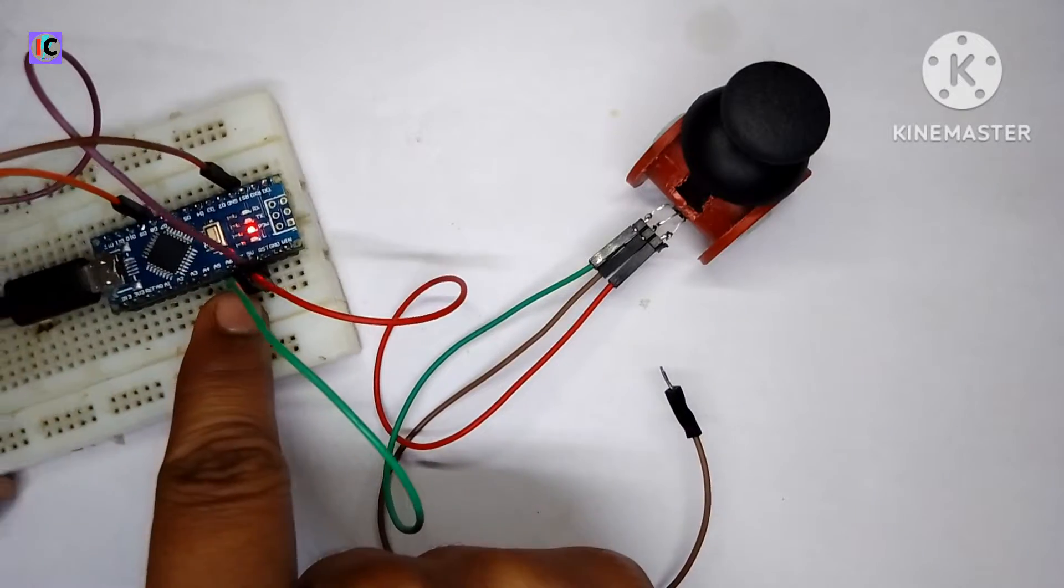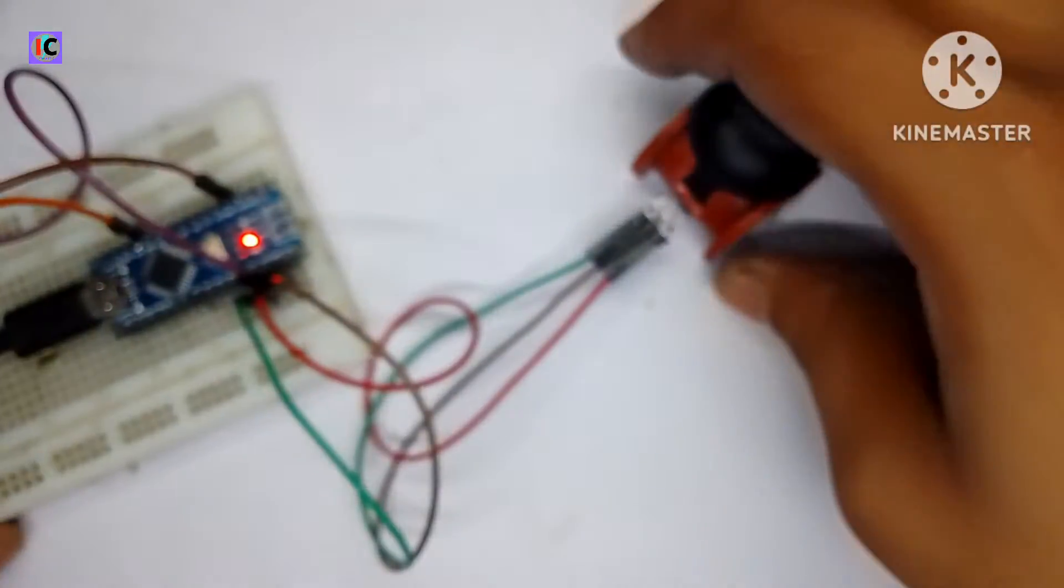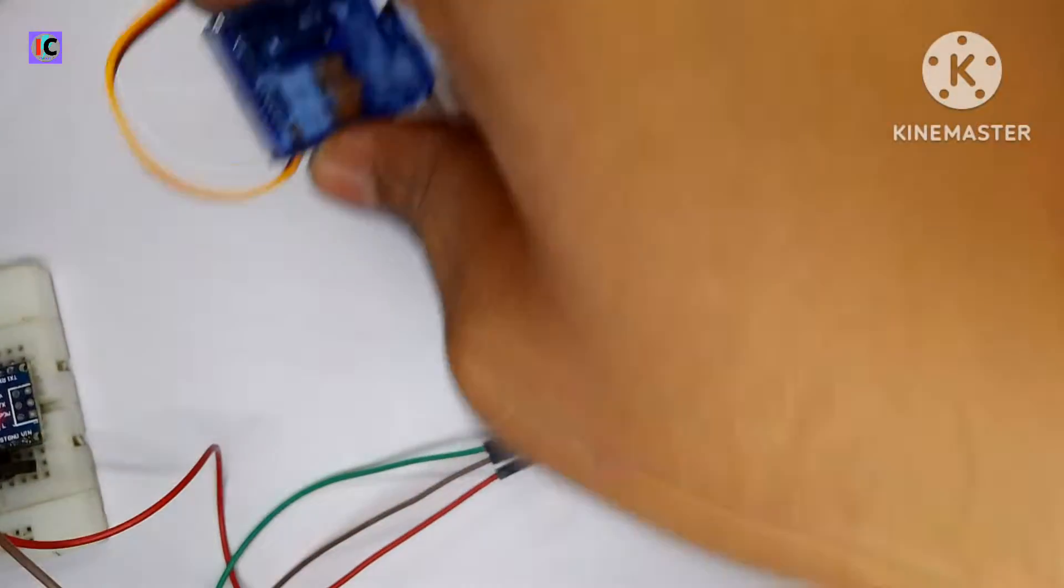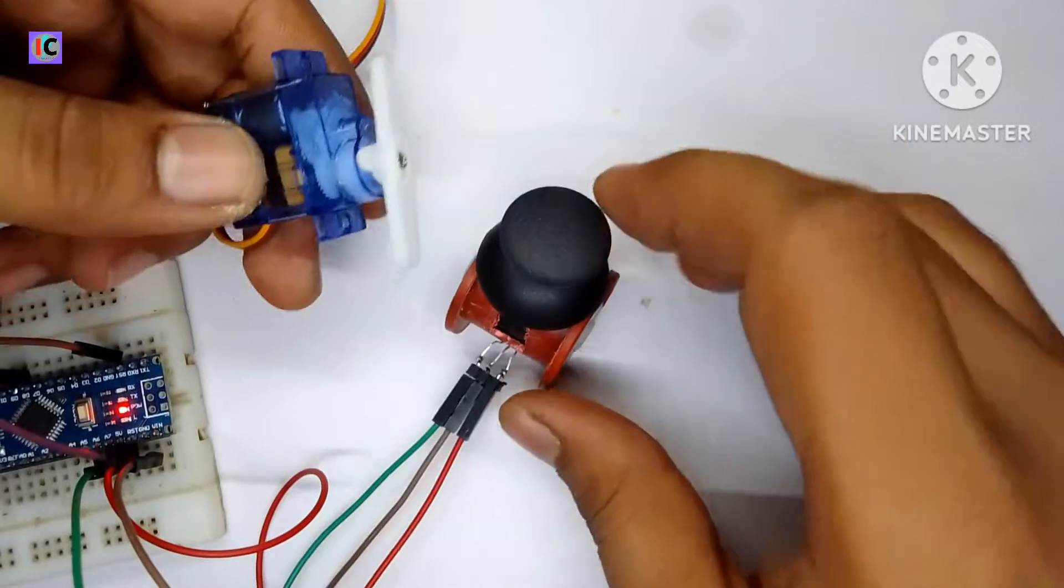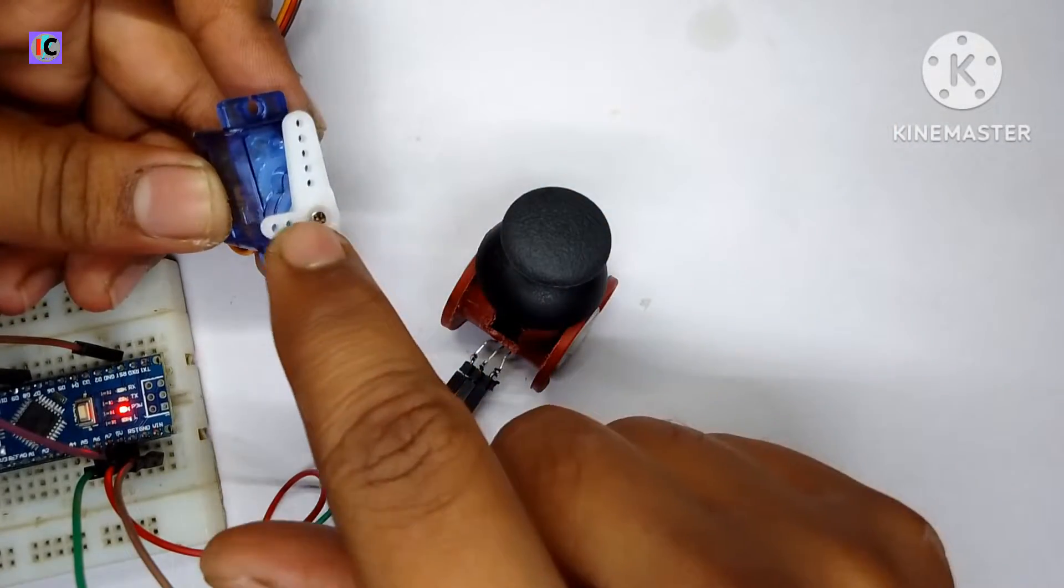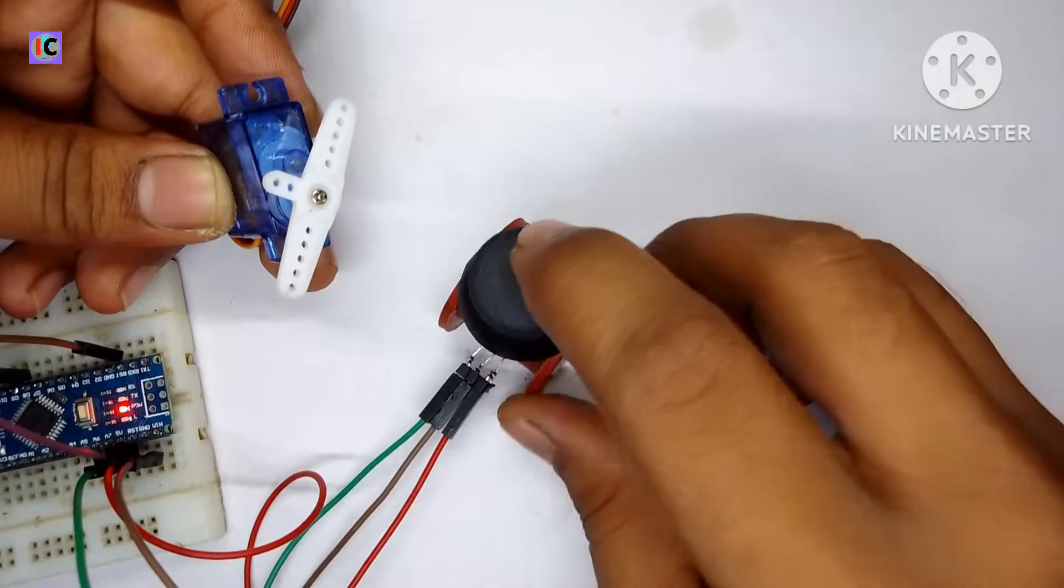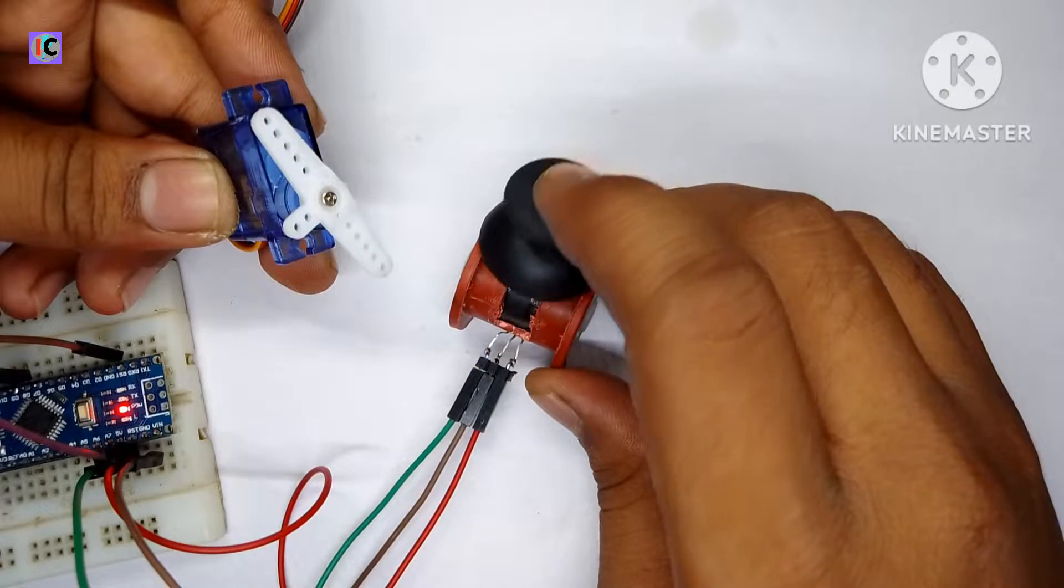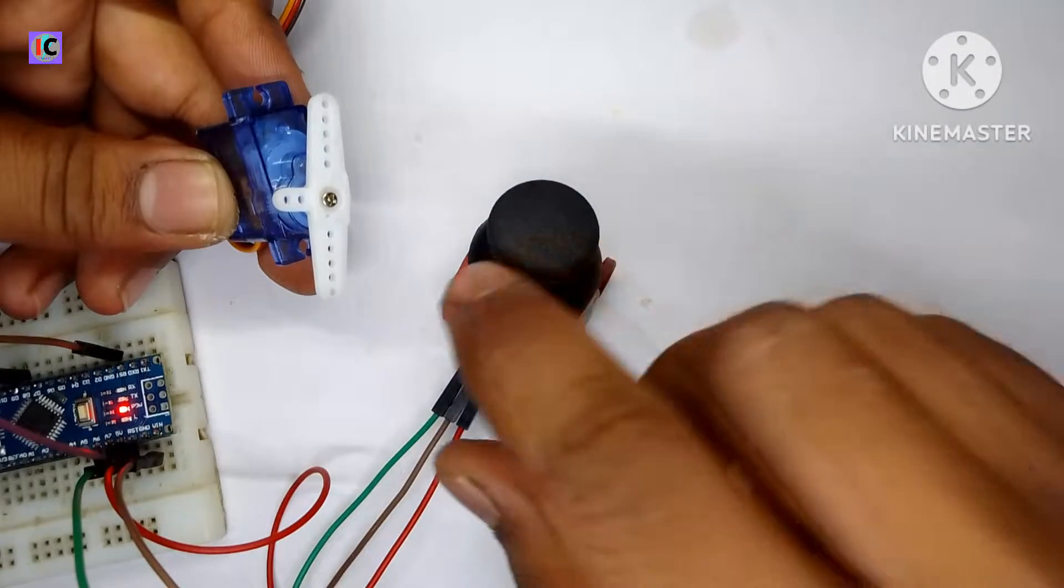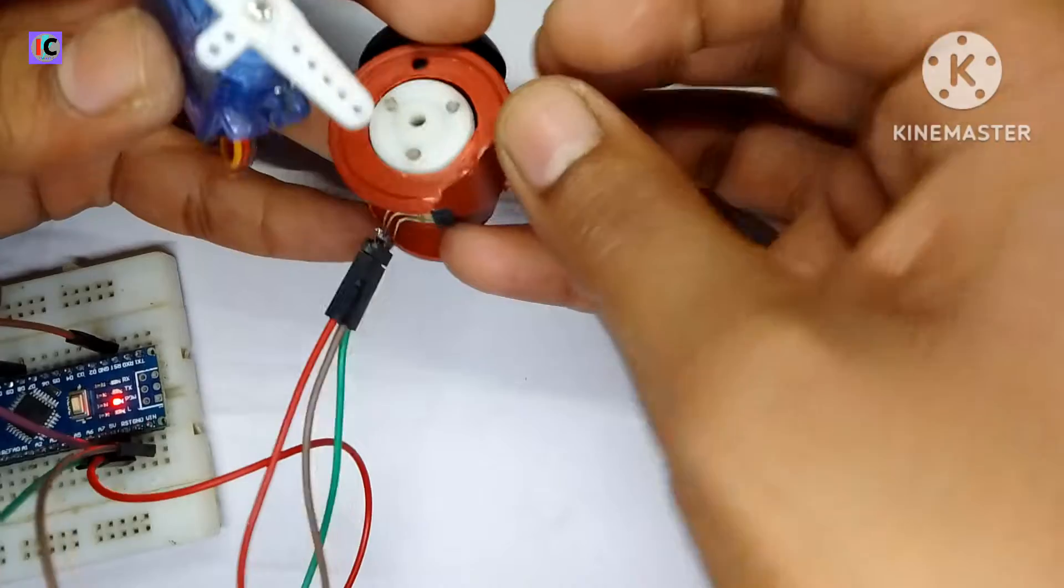As you can see, the connection is completed. When I rotate the stick, the servo also rotates according to the joystick. You can see the servo rotates very precisely as the rotation of this stick on the joystick.